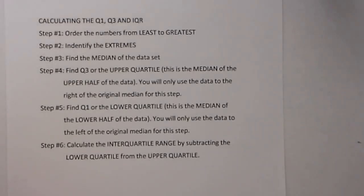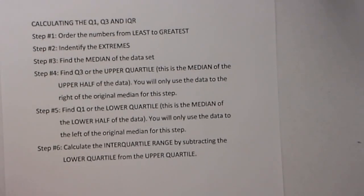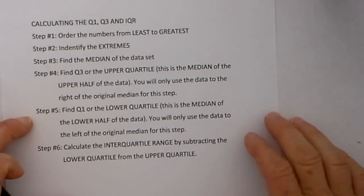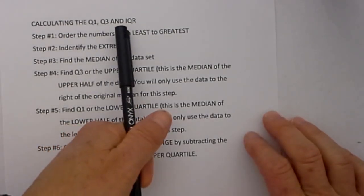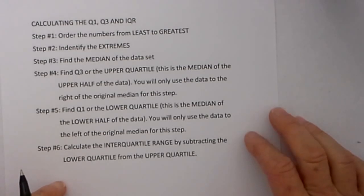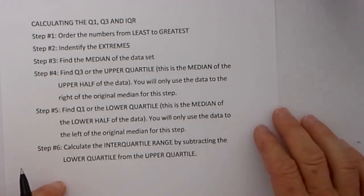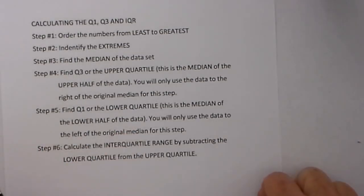Welcome to MooMooMath where we upload a new math video every day. In this video I would like to talk about finding Q1, Q3, and IQR interquartile range. This would be helpful when you are setting up a box plot or doing a box and whisker. You may be a little confused in finding these numbers.